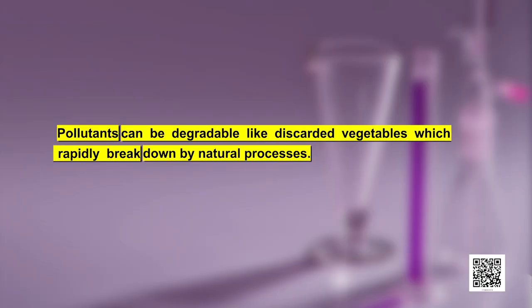A small amount of pollutants in the air becomes significant compared to similar levels present in food, as an average human being requires nearly 12 to 15 times more air than food. Pollutants can be degradable, like discarded vegetables which rapidly break down by natural processes. On the other hand, pollutants which are slowly degradable remain in the environment in an unchanged form for many decades. For example, DDT, plastic materials, heavy metals, many chemicals and nuclear waste are examples of non-biodegradable substances that cannot be degraded by natural processes and are very harmful to living organisms.